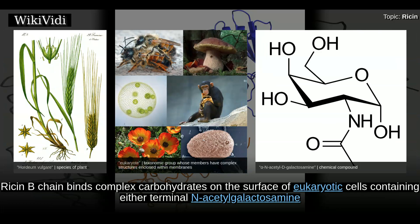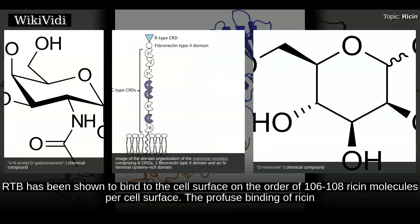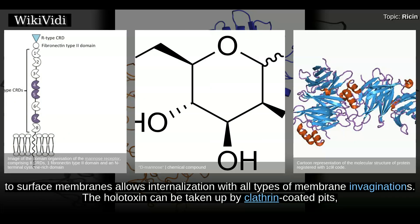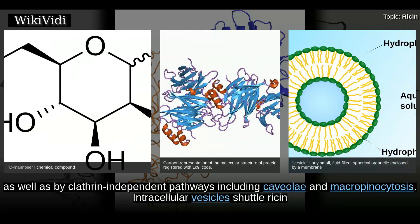Ricin B chain binds complex carbohydrates on the surface of eukaryotic cells containing either terminal N-acetylgalactosamine or beta-1,4-linked galactose residues. In addition, the mannose-type glycans of ricin are able to bind cells that express mannose receptors. RTB has been shown to bind to the cell surface on the order of 10⁶ to 10⁸ ricin molecules per cell. The profuse binding of ricin to surface membranes allows internalization with all types of membrane invaginations; the holotoxin can be taken up by clathrin-coated pits as well as by clathrin-independent pathways including caveolae and macropinocytosis.